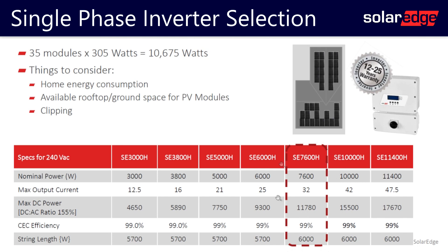The maximum output current of the 7.6 kilowatt inverter is 32 amps. We said the main service entrance is 200-amp service, so without derating the main or doing a line-side tap, the maximum breaker size for the back-feeding breaker is 40 amps — which is ideally sized for this 7.6 kilowatt inverter. If you wanted to upgrade to the 10 kilowatt or 11.4 kilowatt, you may have to consider derating the main or a line-side tap.